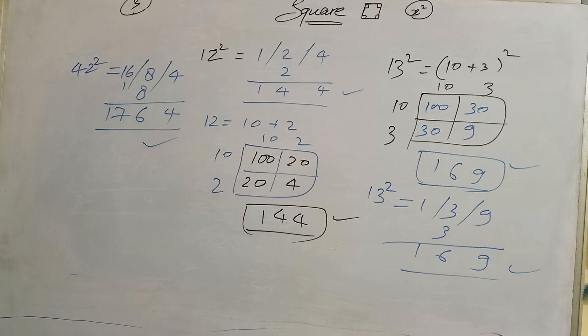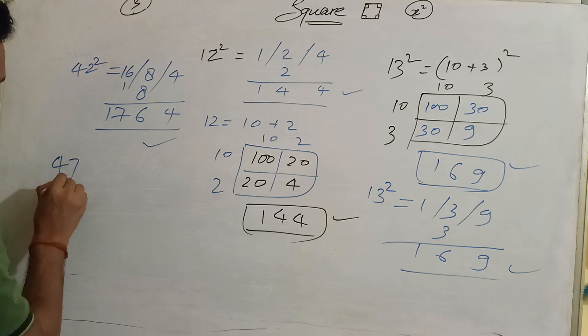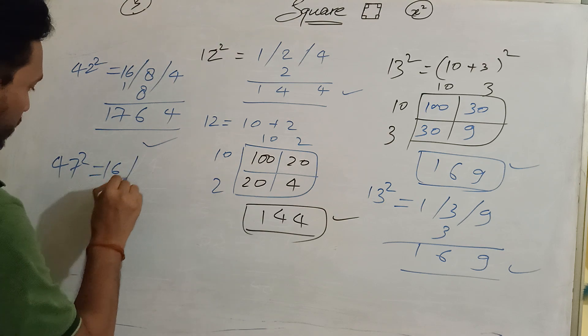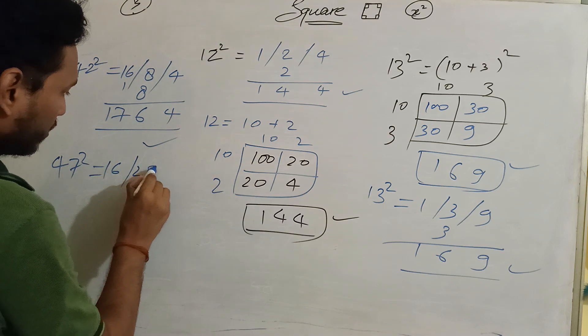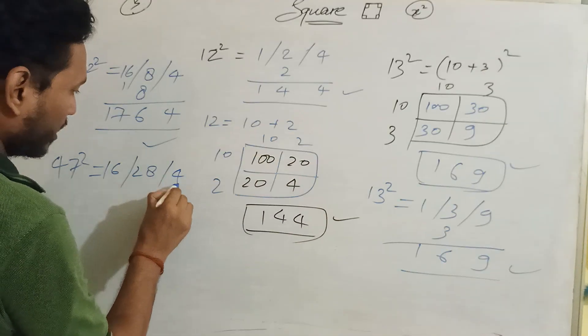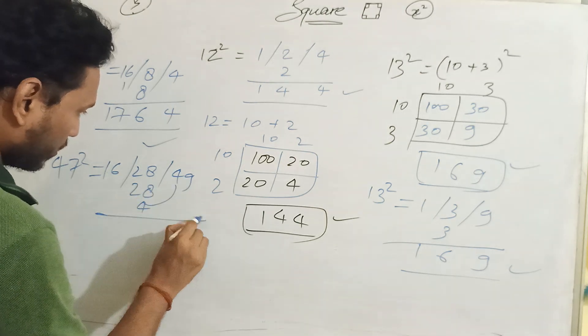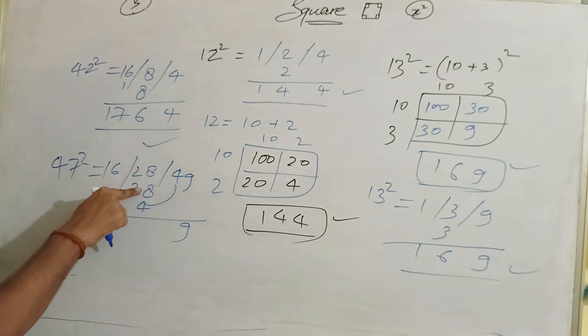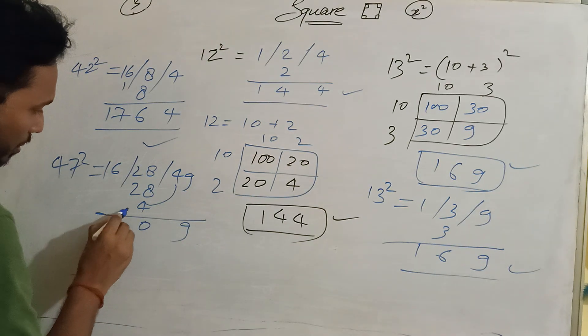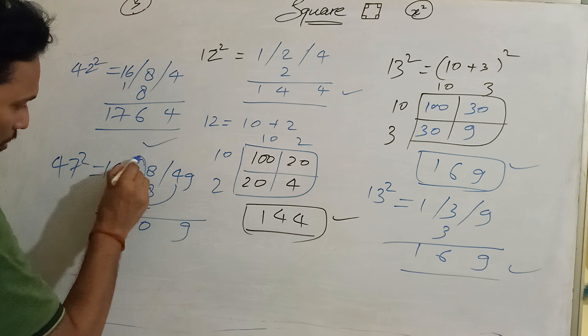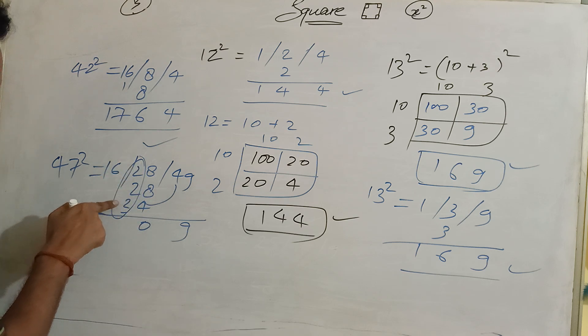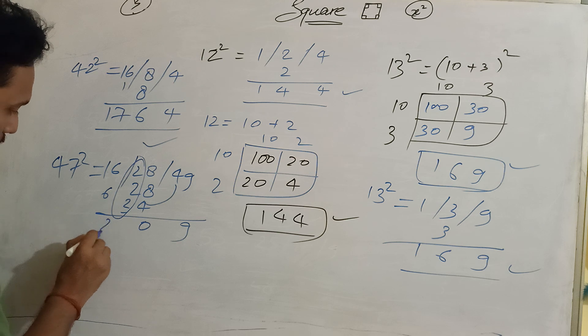This is the first recipe. 47 square - what will be the square? 4×4=16, 4×7=28, 7×7=49. 28, 4, 9, 8, 8, 16, 16, 4, 20, 2, 8, 2, 2, 4, 2, 6, 6, 6, 12.